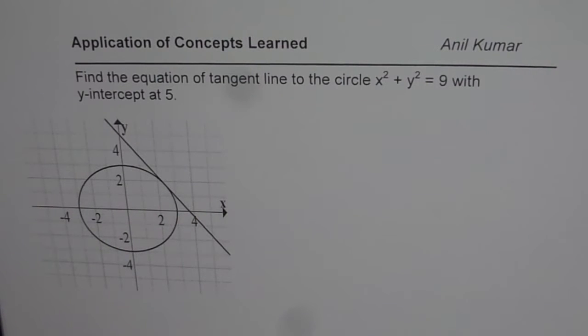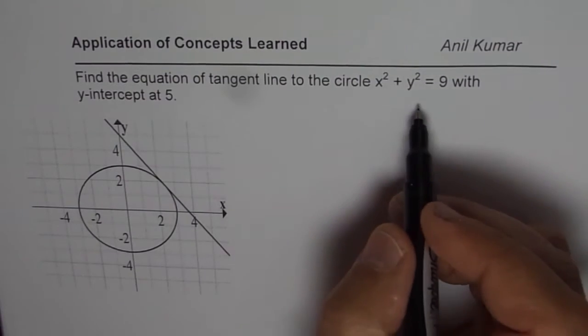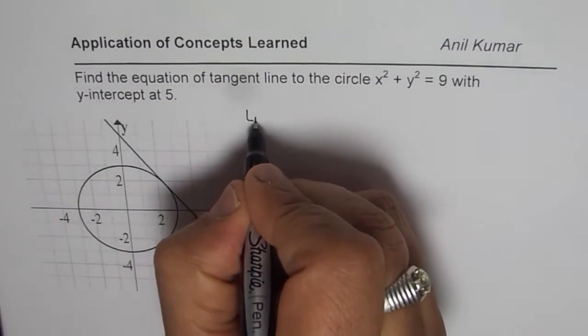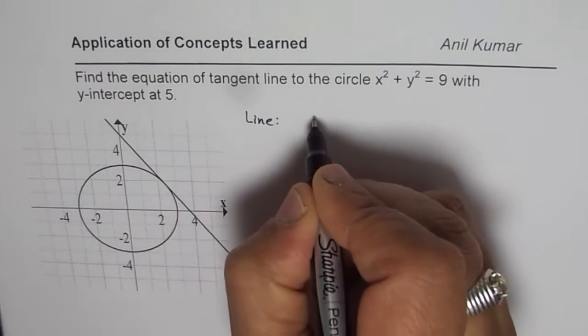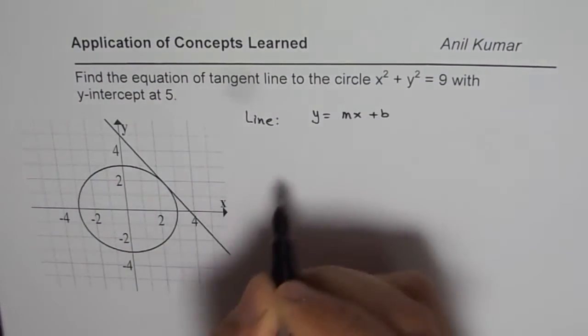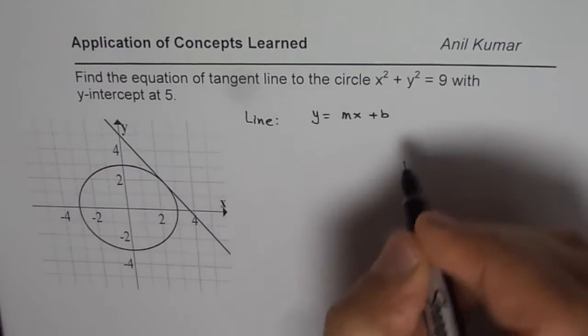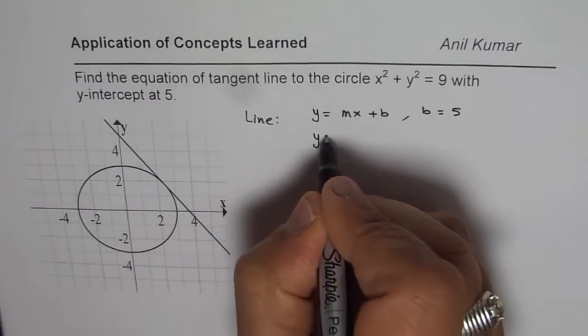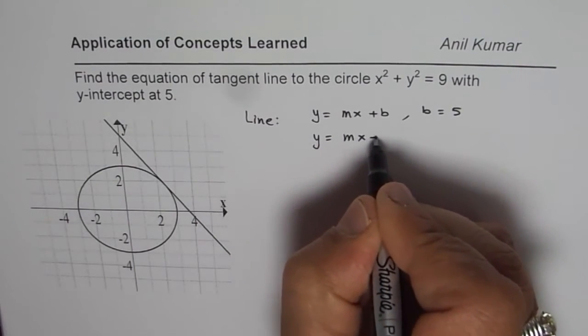We need to find equation of this tangent line. You can pause the video, answer the question and then look into my suggestion. Now, when we say equation of tangent line, so it is line. Let us say that this line is represented by y equals to mx plus b. Now, we are given y intercept is 5. So, we are given b equals to 5 and therefore the line will be y equals to mx plus 5.